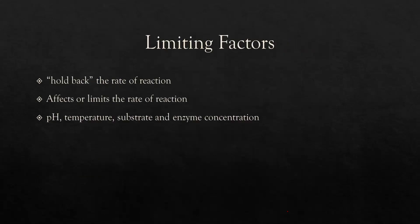There are some limiting factors that can affect the rate of reaction even when an enzyme is present. They can increase or decrease the rate of reaction. For enzyme-controlled reactions, the four limiting factors are pH, temperature, substrate concentration, and enzyme concentration. There is a specific pH for different enzymes that works best for them. For temperature, 37 to 45 degrees Celsius is the optimum temperature range for enzymes.